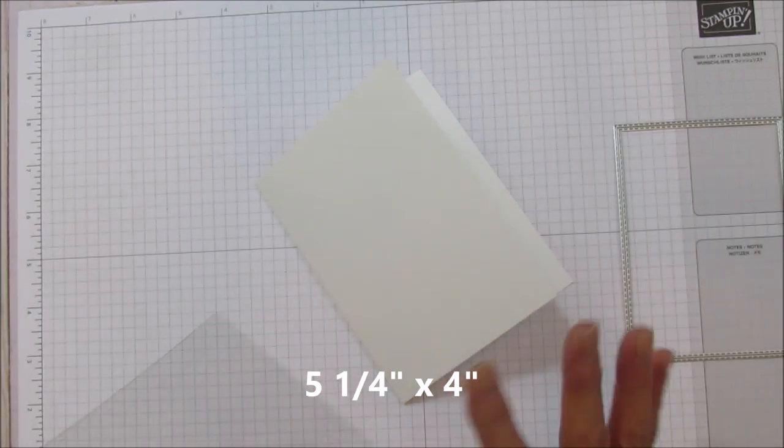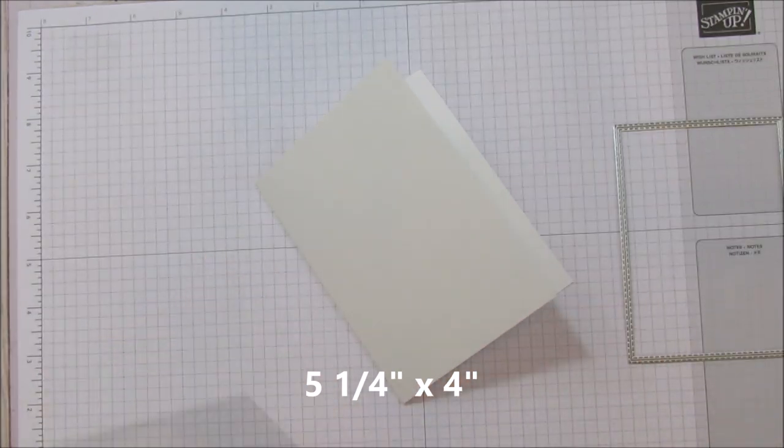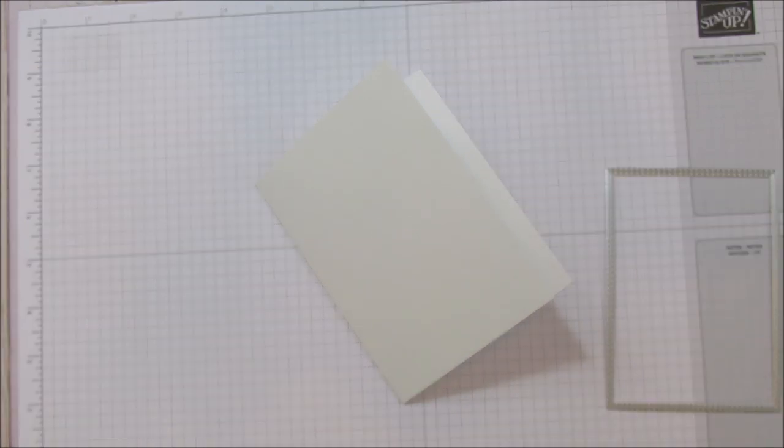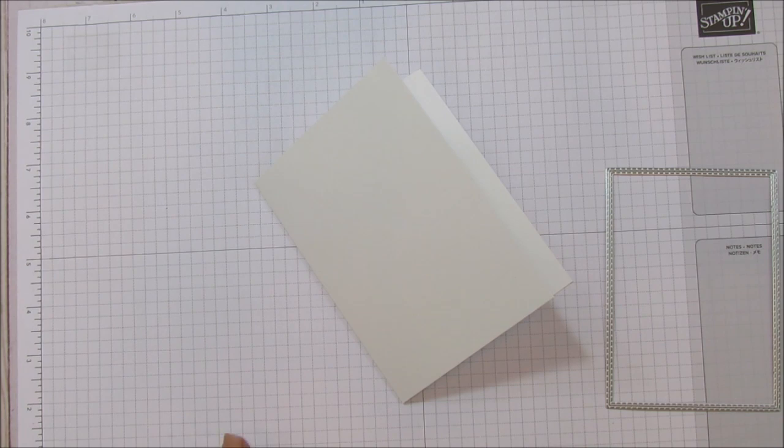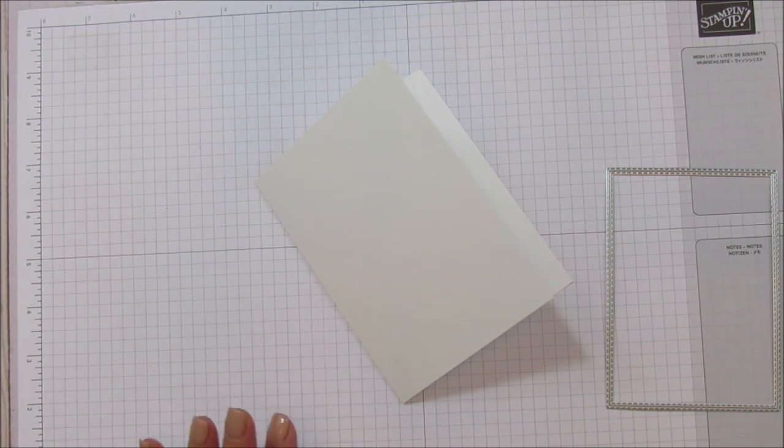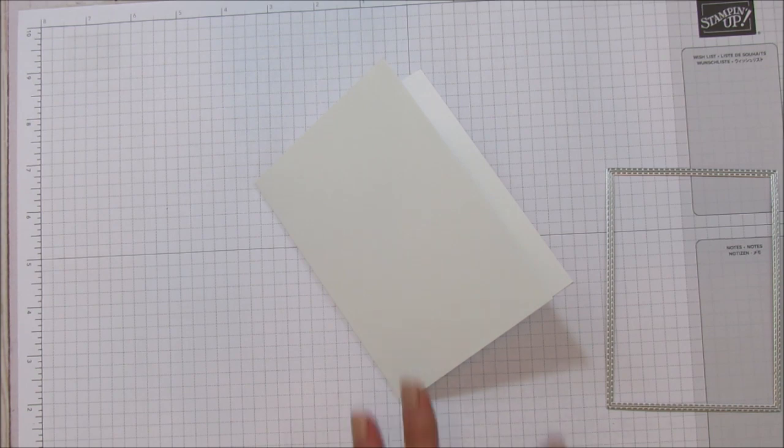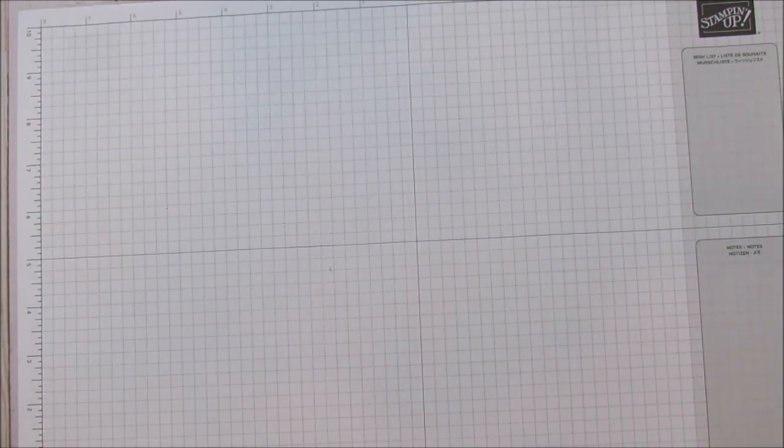Besides our window sheet, which is five and a quarter by four because you want it to fill the hole inside of the card so it looks nice and neat. The first thing we're going to do is cut our window out and we'll go ahead and cut the snowflakes at the same time.